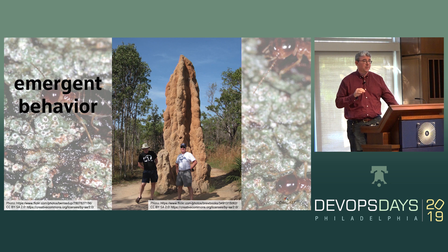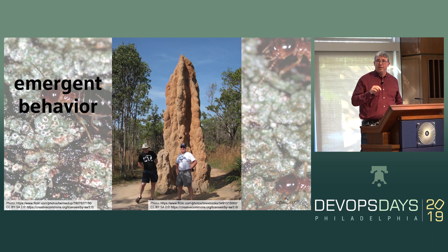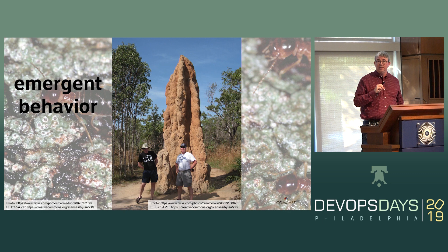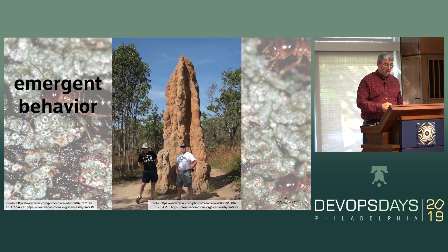My uncle is a retired professor of anthropology. One of the things he said to me is that one of the main things holding back human society is that we only have 1,400 cubic centimeters of brain — we actually have finite processing capabilities. We are building systems that are literally impossible for one person to understand, because we simply don't have enough computing power to understand all of the things that are going on. Nonetheless, there are plenty of successful companies that make lots of money and make their customers happy.